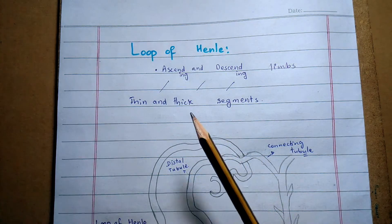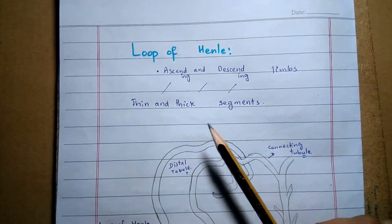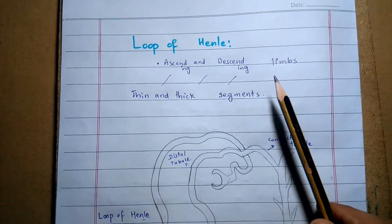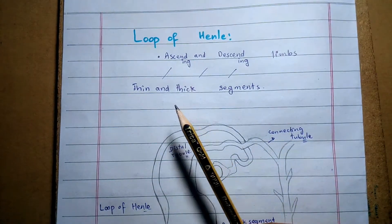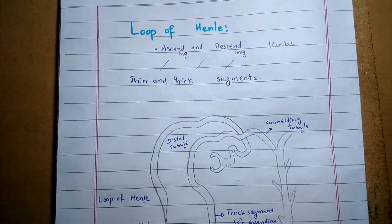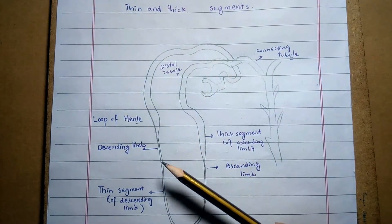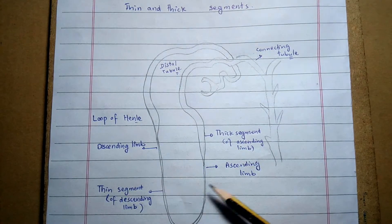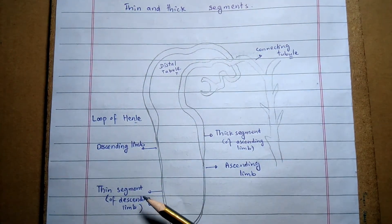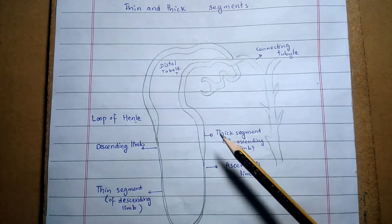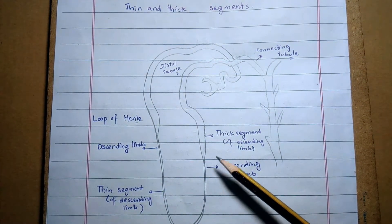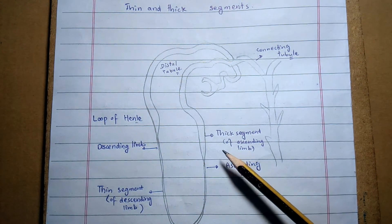The loop of Henle is dipped in the renal medulla and has ascending and descending limbs. It also has thin and thick segments. The walls of the descending limb and the lower end of the ascending limb are very thin, so they are called the thin segment of the loop of Henle. The upper part of the ascending limb has a thick wall, so it is called the thick segment of the loop of Henle.